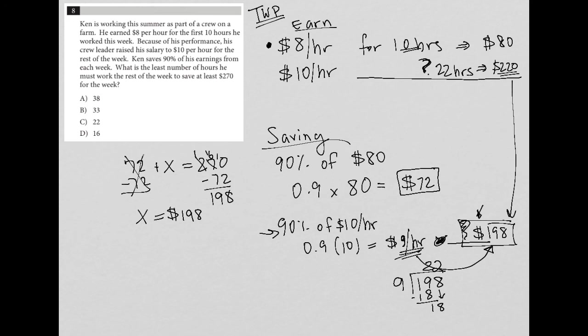So again, the question is just asking how many hours, what is the least number of hours he must work the rest of the week? Well, it has to be those 22 hours. So in order to save this additional $198, which would take him up to a total of $270 saved, then he must work an additional 22 hours. So the correct answer here is choice C.